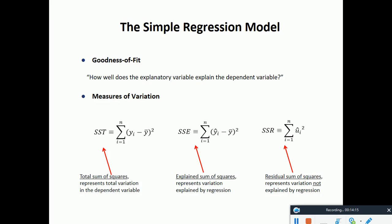SSE is the sum of squares explained by the predicted model, and SSR is not explained by the predicted model — it's the residual or error component. Another concept is goodness of fit.